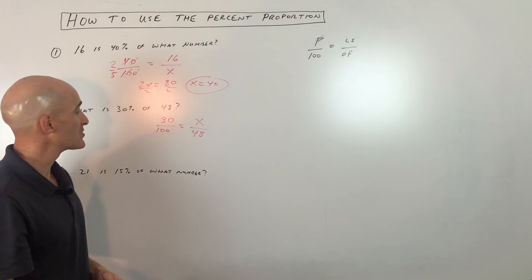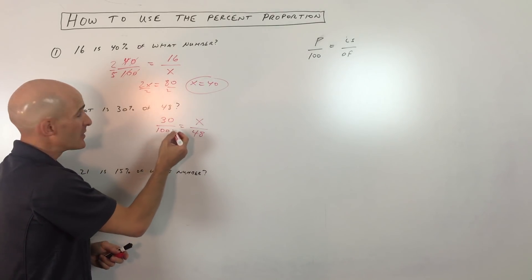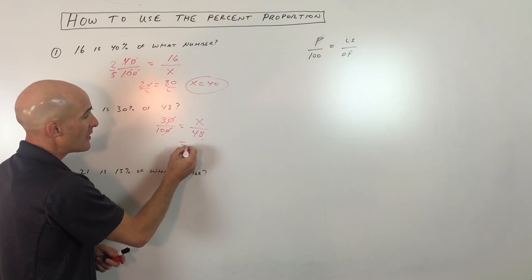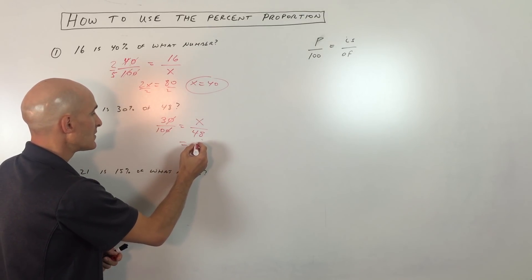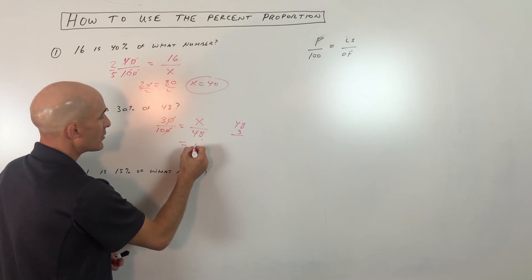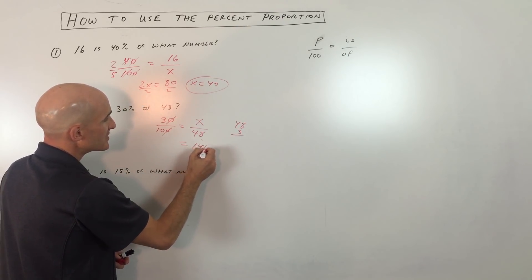All we have to do is cross-multiply and solve. Let's reduce a little bit here first. If we divide the top and bottom by 10, we can reduce this fraction to 3-10ths. So now when we cross-multiply, we get 3 times 48, which is, let's see, 48 times 3, that's 144.